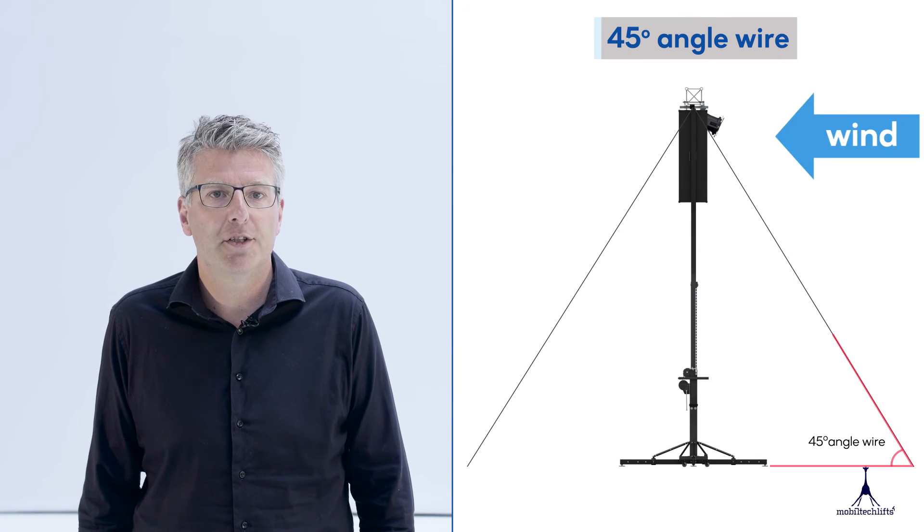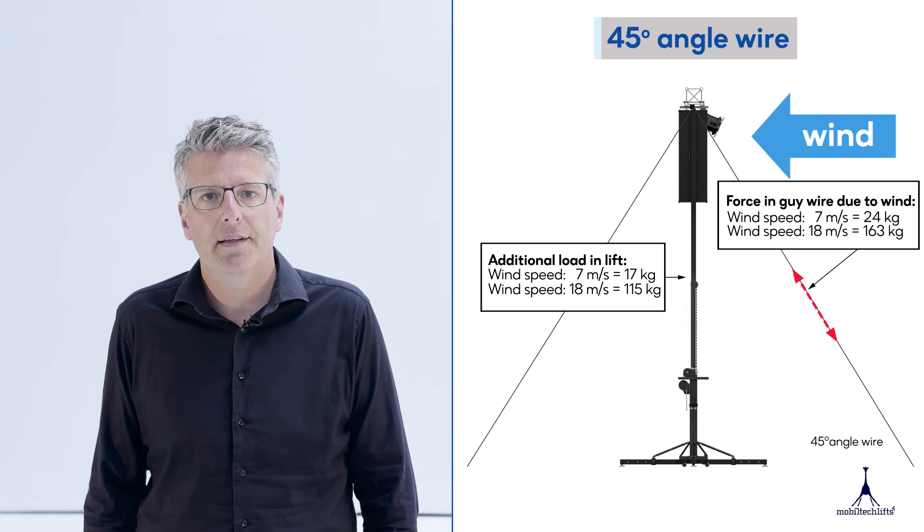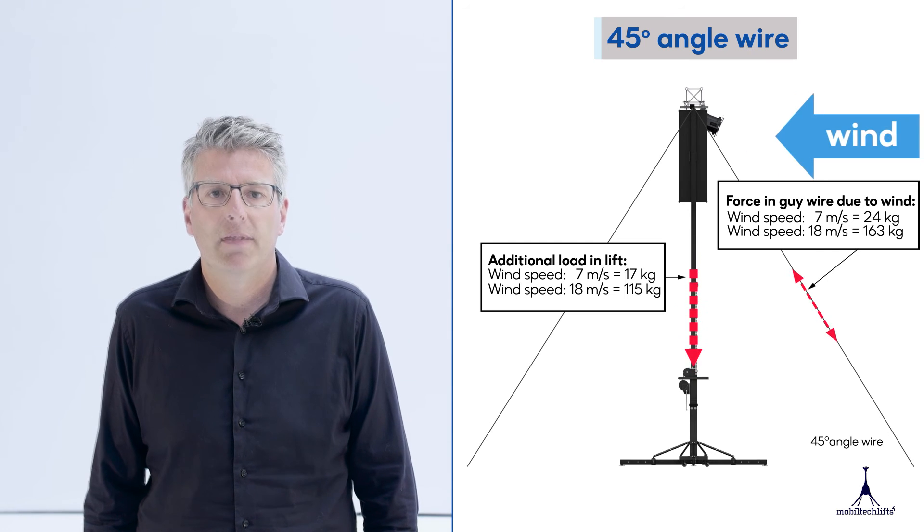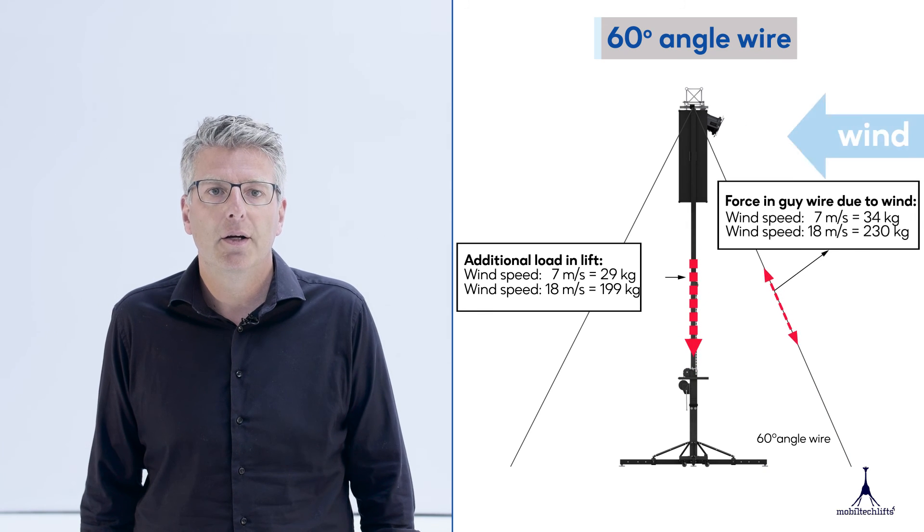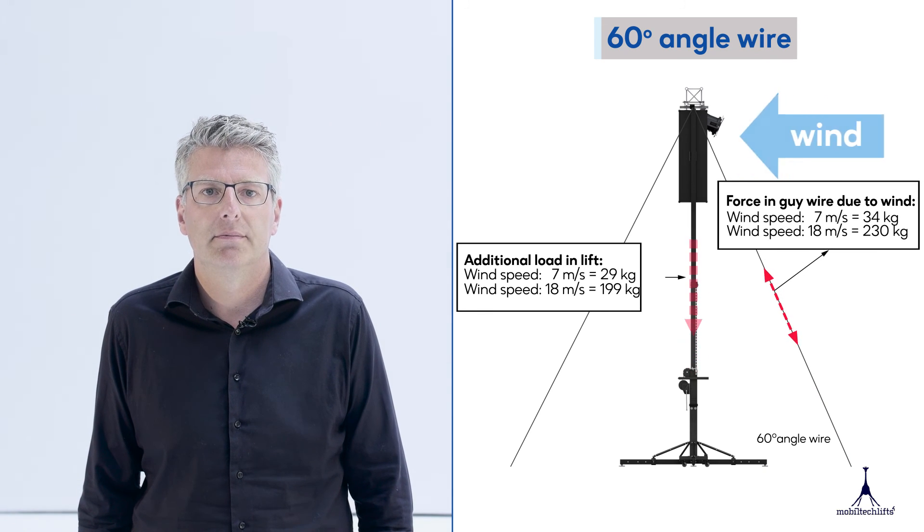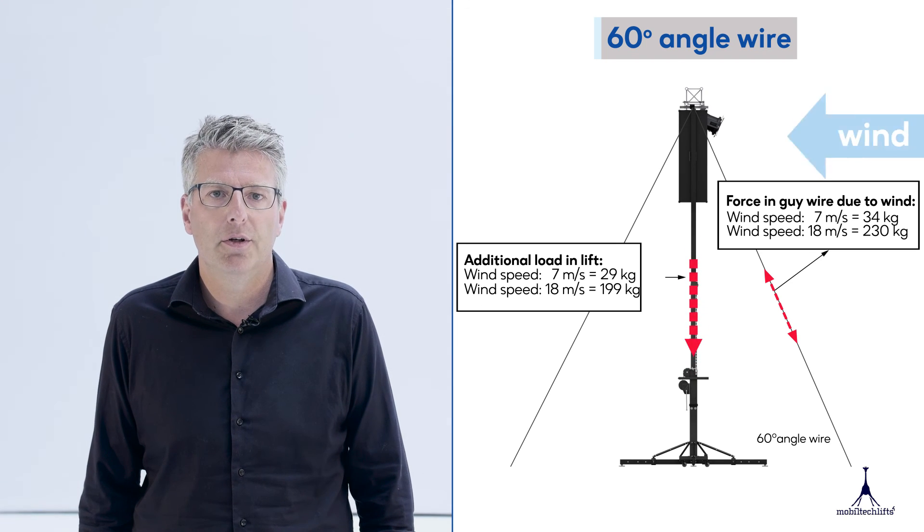The following pictures show the additional load guy wires generate under 45 degree angle at different wind speeds. When the angle becomes steeper the load increases significantly compared to the previous example. So watch out because you can easily overload your lift.